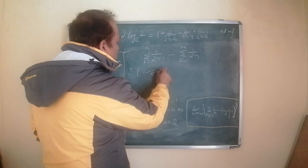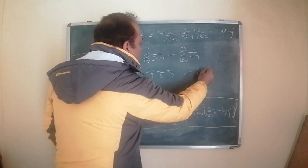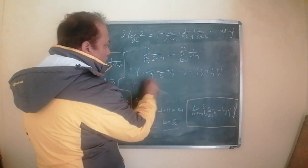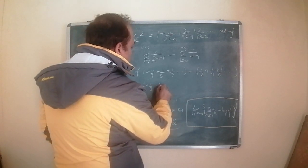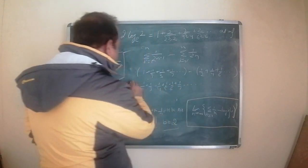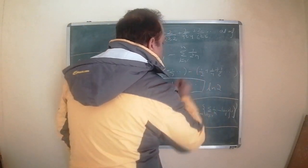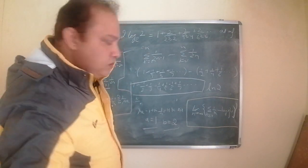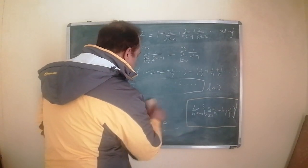Replacing the terms, this gives: 1 plus 1/3 plus 1/5 plus 1/7 and so on, minus (1/2 plus 1/4 plus 1/6 and so on). On evaluating further, this gives 1/3 minus 1/4 plus 1/5 minus 1/6 plus 1/7 and so on, which is nothing but the series expansion of natural log of 2. So this is the second, very elementary proof given by Ramanujan for arriving at this result.